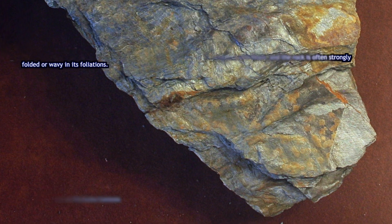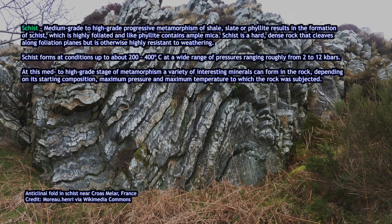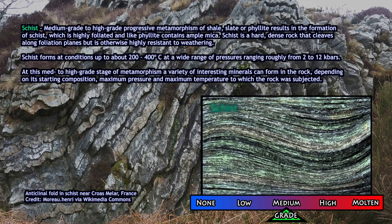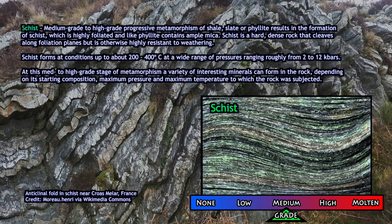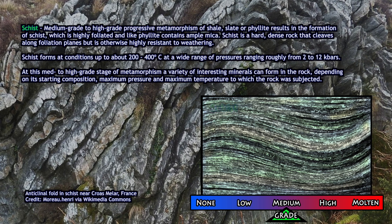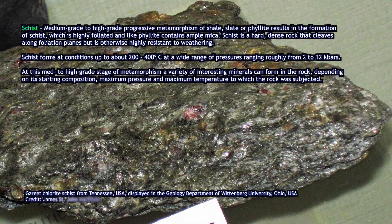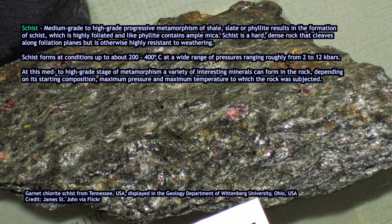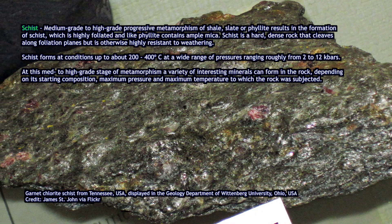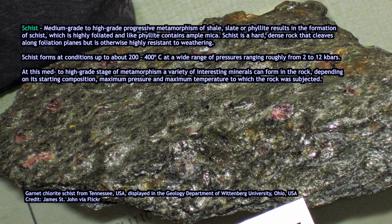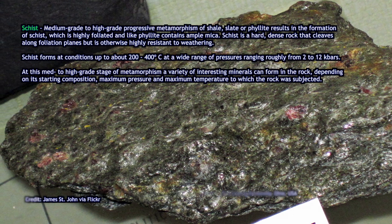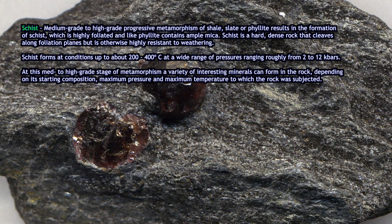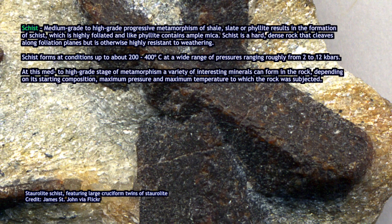Higher grade than phyllite is schist. A schist is what you get when you take something like shale, metamorphose it through to slate and then further to higher pressures and temperatures where even the slaty layers recrystallize together more strongly. Schist will cleave in platy directions but typically won't break into thin plates very much — it's tougher than that and will often show a wavy pattern imposed by pressure. The original material is still mostly there but now in different minerals, and you can see spectacular minerals at this medium grade of metamorphism, like garnets.